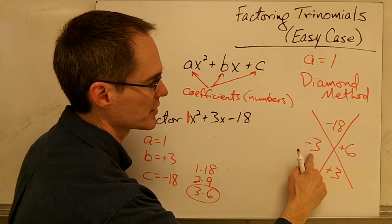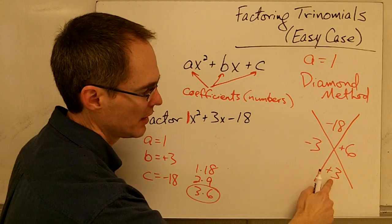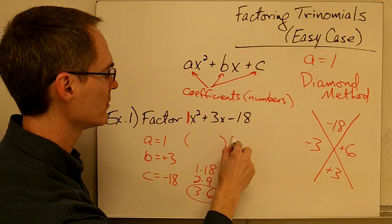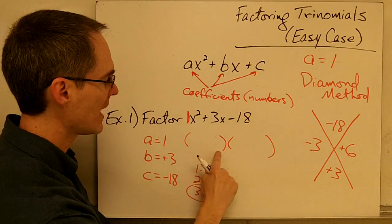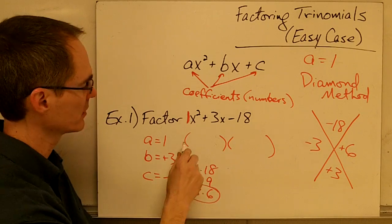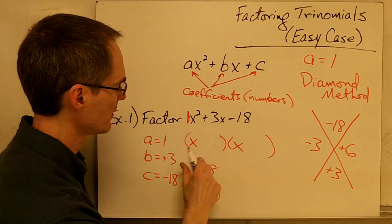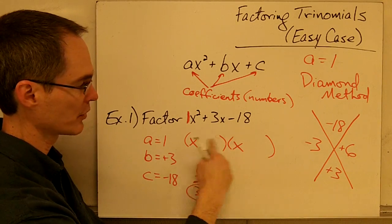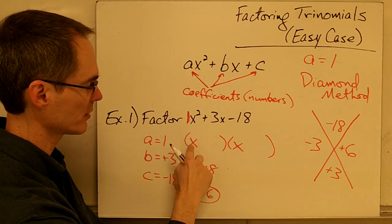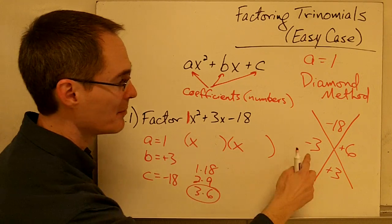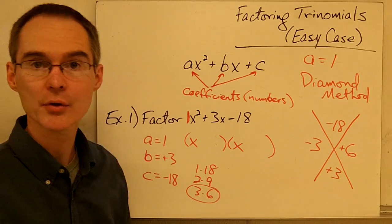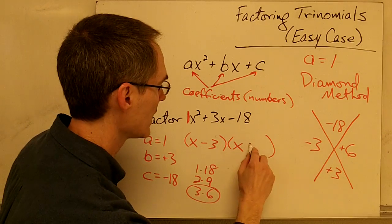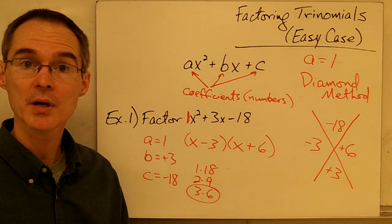Once I've found these two numbers — they multiply to give me the top number and add to give me the bottom number — I can write down my two binomial factors. The first term in each parenthesis is going to be x, since x times x gives me the x squared term. My other two numbers are just those from the diamond, so the factored form is x minus 3 times x plus 6, and I'm done.